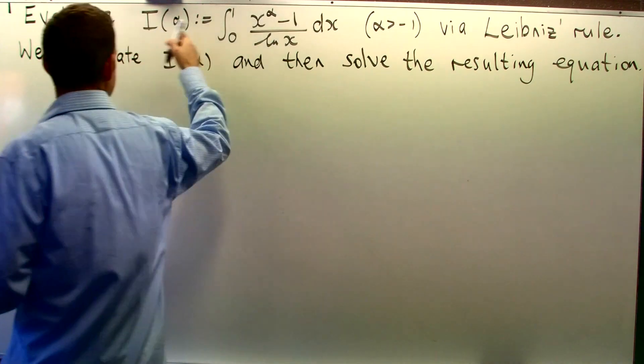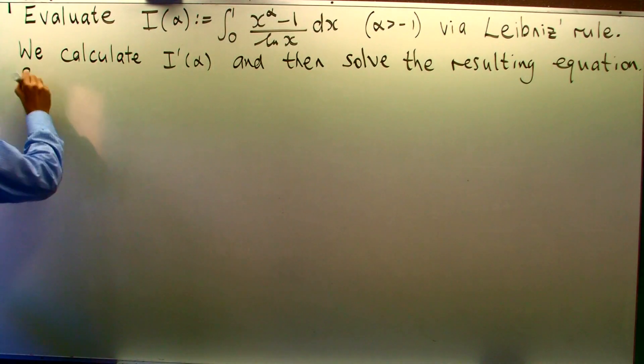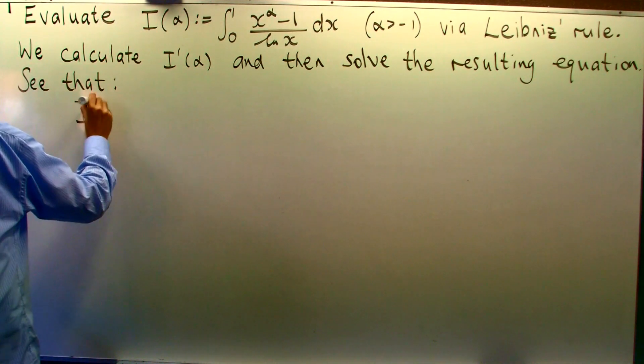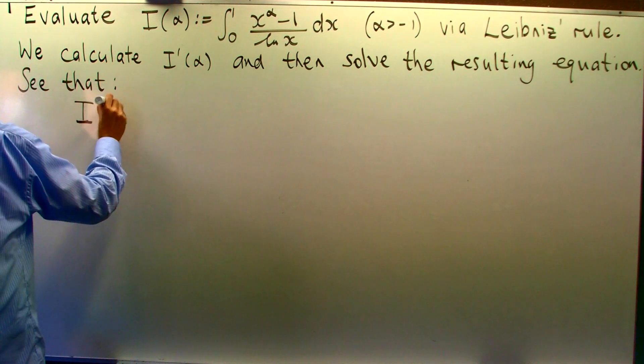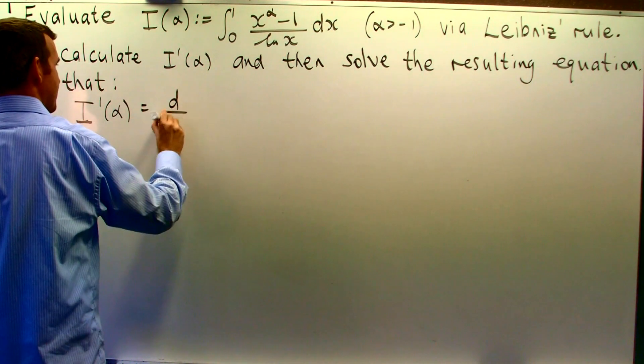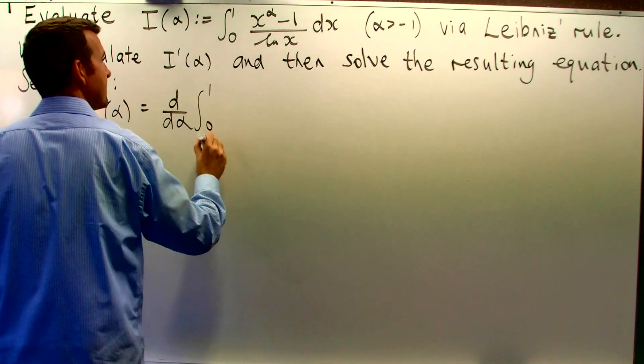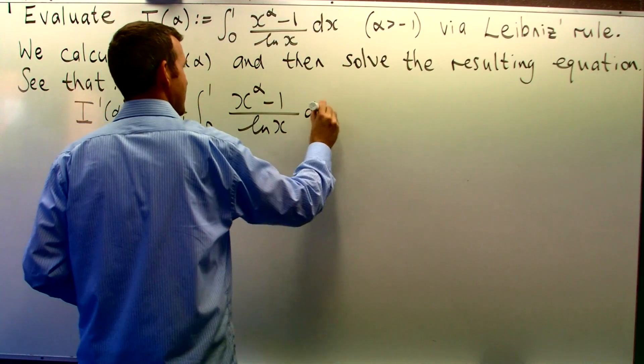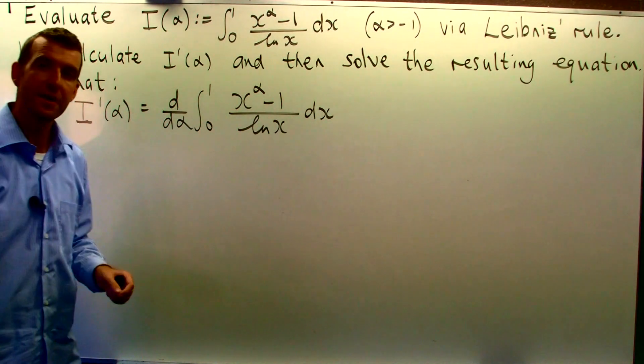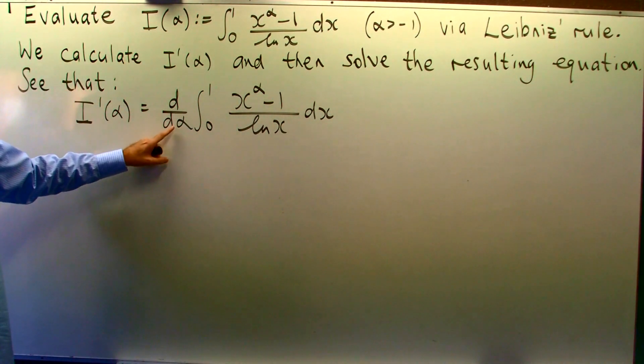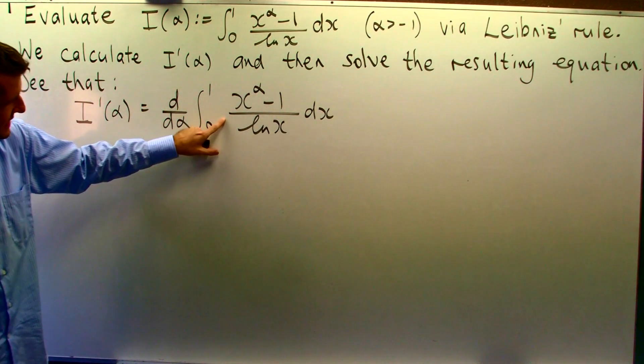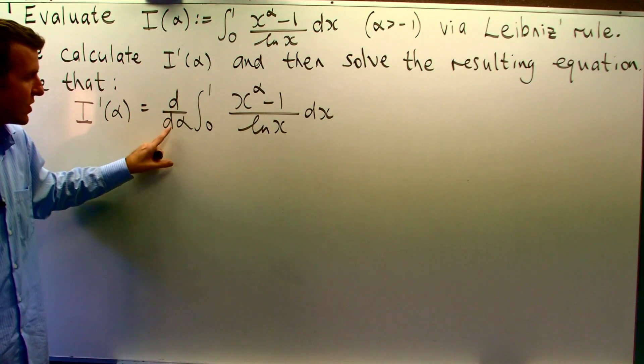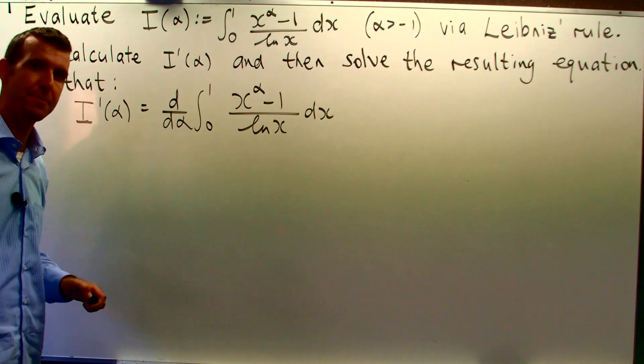So let's differentiate both sides of our given expression. In the next step, we're going to apply Leibniz rule. Now, Leibniz rule says I can push this d/dα inside the integral sign and I just change these straight d's to curly d's. So we're calculating a partial derivative here.